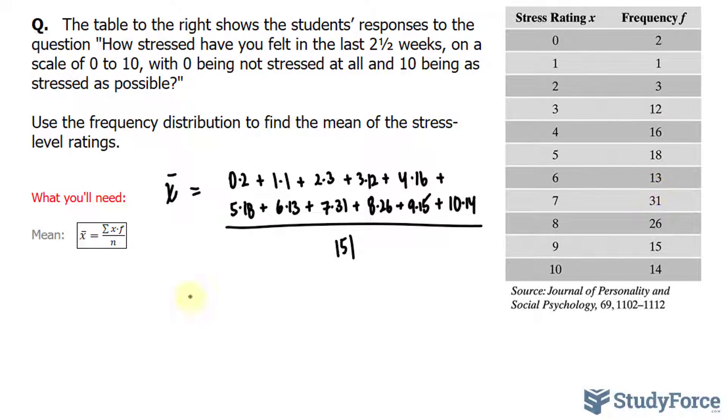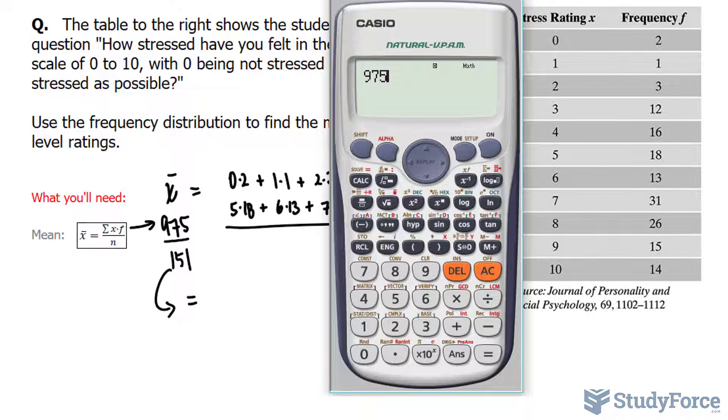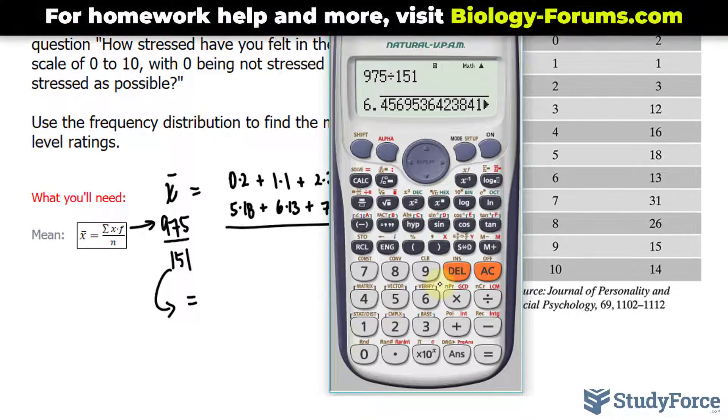Now that we have everything we need, it's a simple matter of substituting all these values into your calculator and dividing by 151. The numerator, if you multiply and add all of these numbers, should equal 975. So 975 divided by 151 gives us 6.45.